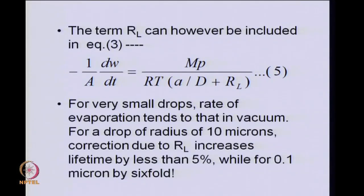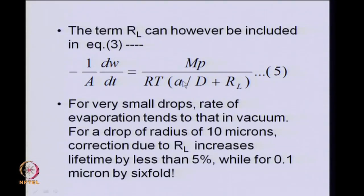While talking about evaporation, when the liquid phase resistance was negligible, we had minus 1 by A times dW by dt giving the rate of loss of weight of the drop per area, related to the driving force P by RT — the concentration in the vapour corresponding to saturation vapour pressure — and the resistance, which would be only in the gas phase: radius A divided by diffusivity of the vapour in the gas phase. If the resistance in the liquid were to come into picture, it would be added to this gas phase resistance.